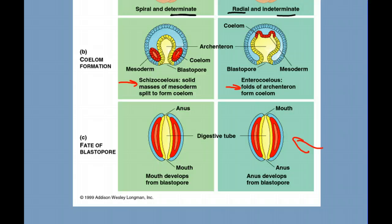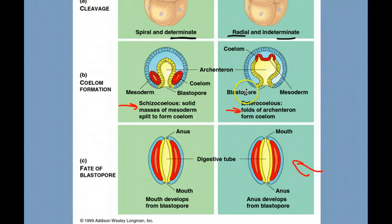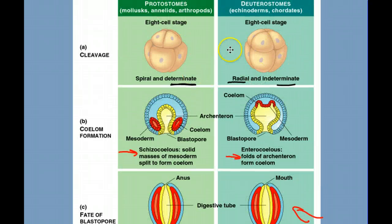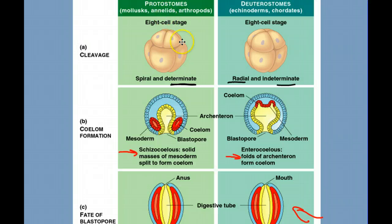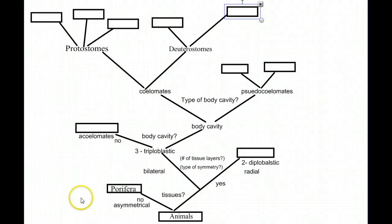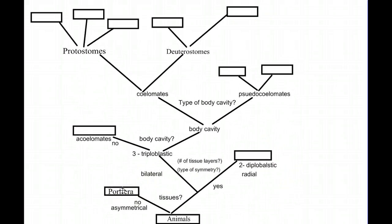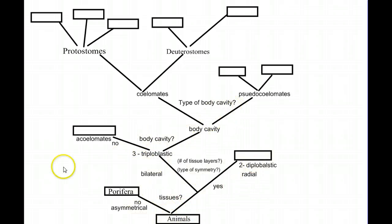There are other differences between protostomes and deuterostomes in how the mesoderm develops and in the original pattern of cell division. But for now, the fate of the blastopore is the defining difference within the divergence of coelomates into the protostome branch and the deuterostome branch. What we have to do in this unit is go through, starting with the Porifera, and at each one of these boxes fill in the type of animal that belongs there, and discuss the evolutionary trends as we move through the diversity and evolutionary relationships among animals.